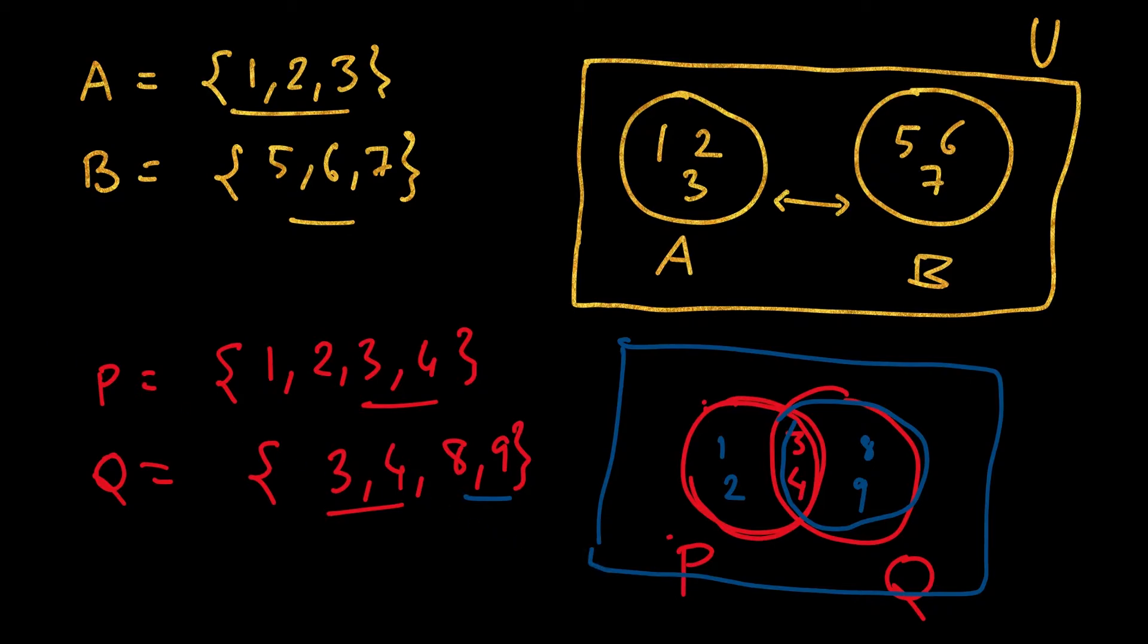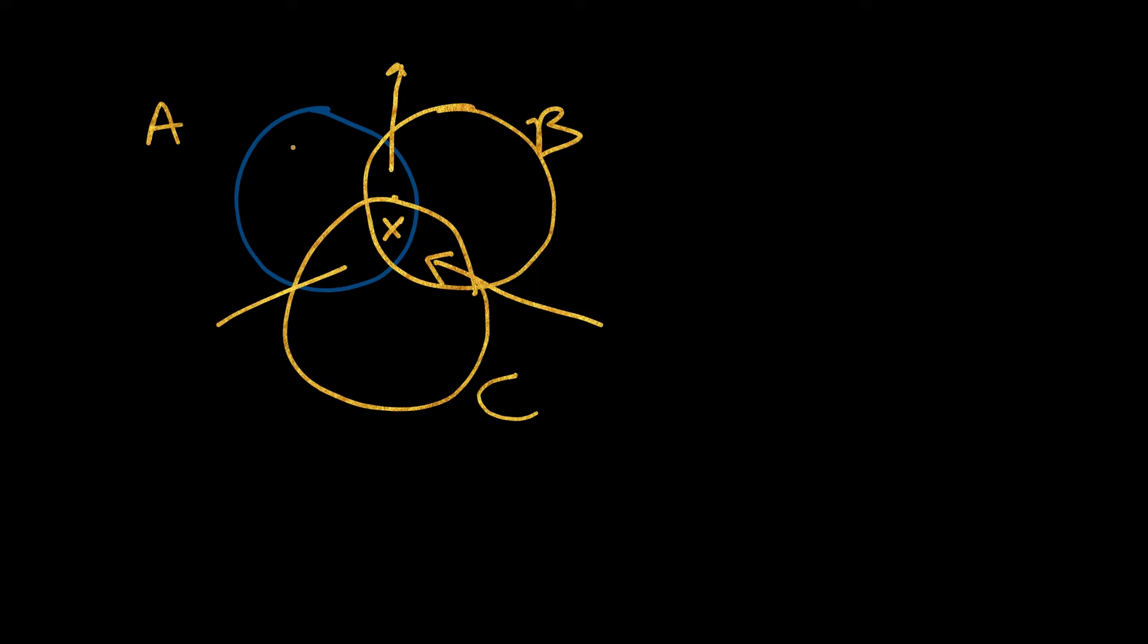In this way we represent sets using a Venn diagram. We can have even more sets. For example, we can have one set, a second set, and there may be a third set. This region is common to all of these three, so all the elements which are common to all three we will write here. Elements common to A and B we will write in this part, elements common to A and C here, and elements common to B and C we will write here. This part will have the elements which just belong to A and do not belong to B and C, similarly for B and C.